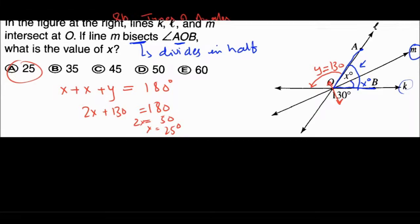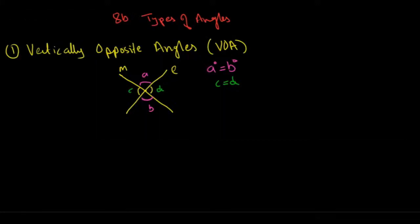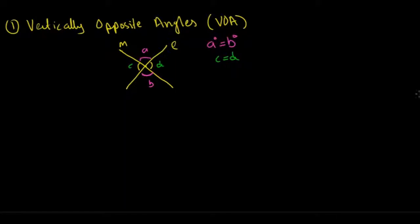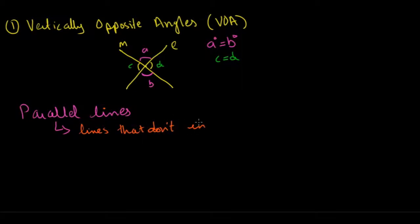Let's get back to more about types of angles. So we had vertically opposite angles. Before going into the next type, we need to look at a concept of parallel lines. So these are lines that do not intersect at all, no matter how long they are.